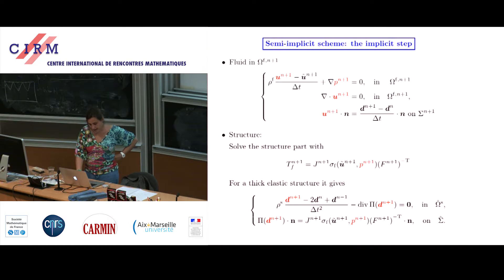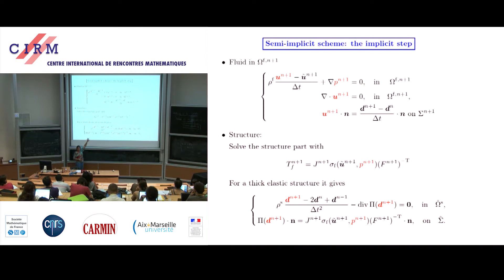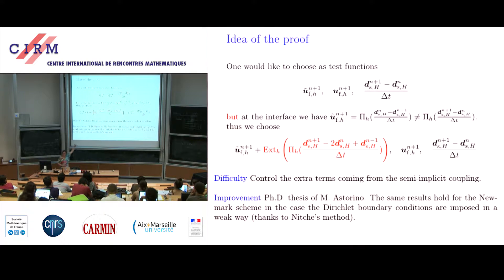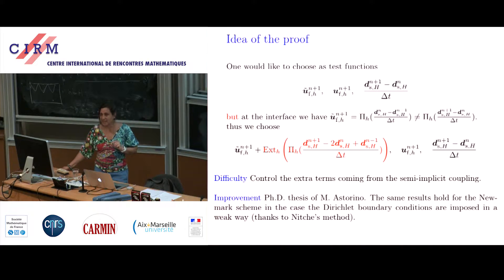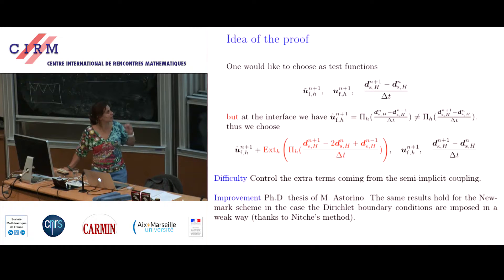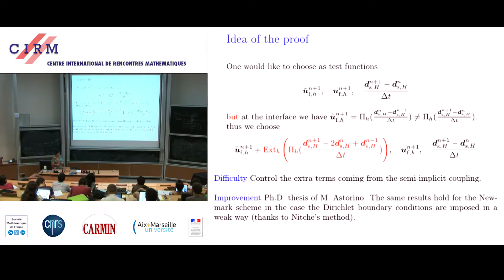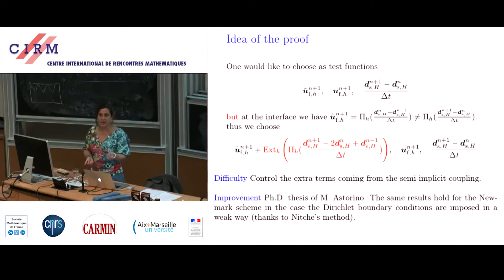One remark: here I chose the leapfrog scheme, not the Newmark one. The leapfrog scheme dissipates a lot of energy, and the extra term is controlled thanks to this dissipation. If I take the Newmark scheme, which conserves the energy of the structure, I will not be able to control this term. From the theoretical point of view this is unsatisfactory: we have to have non-matching grids in some case, and we have to choose a scheme for the structure that dissipates enough energy.